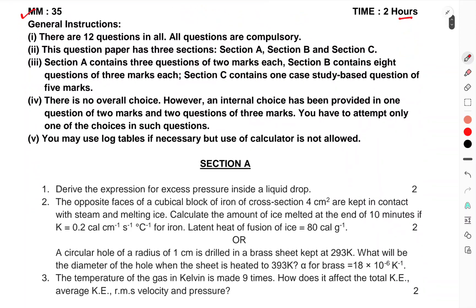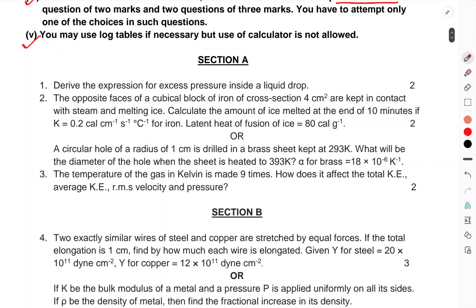First of all, General Instructions. There are 12 questions in all. All questions are compulsory. This question paper has 3 sections: Section A, B, and C. Section A contains 3 questions of 2 marks each. Section B contains 8 questions of 3 marks each. Section C contains 1 case based study question of 5 marks. There is no overall choice. However, internal choices have been provided in 1 question of 2 marks and 2 questions of 3 marks, and you have to attempt only 1 of the choices in such questions. You may use log tables if necessary, but use of calculator is not allowed.